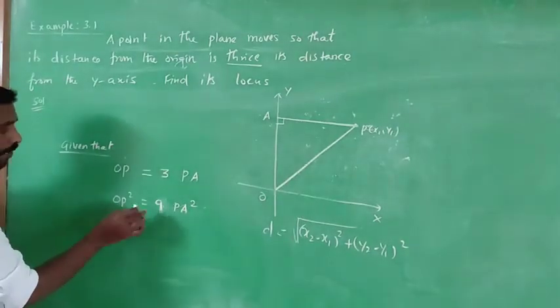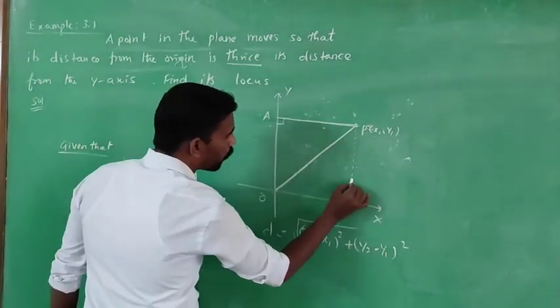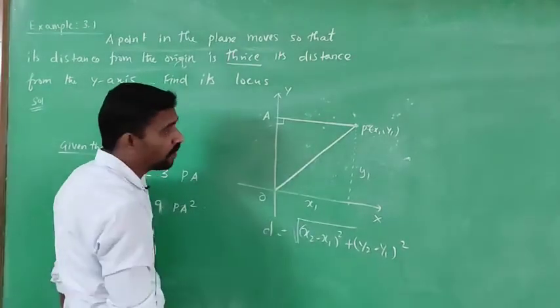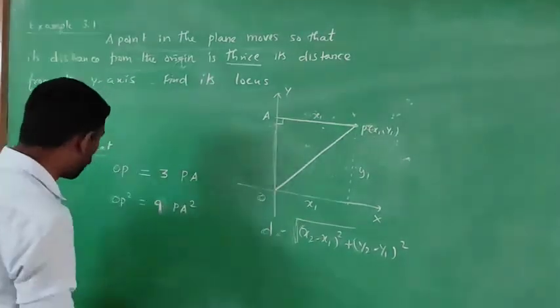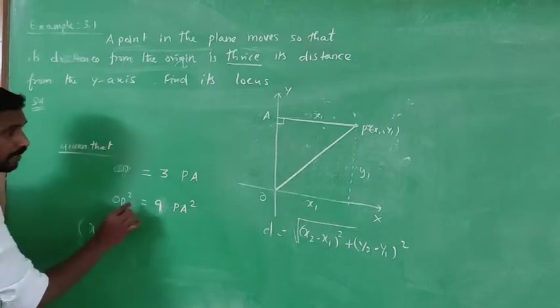If this point is (x1, y1), and the distance is x1 from the y-axis, then for OP with origin at (0, 0), we have (x1 - 0)² plus (y1 - 0)².